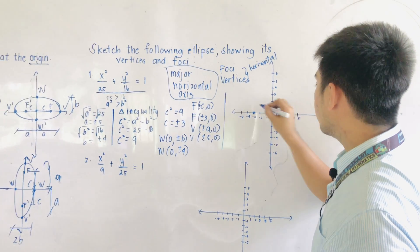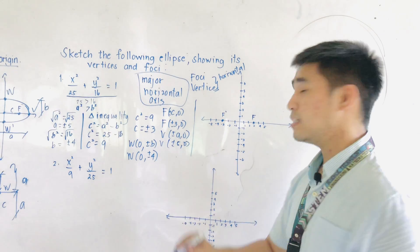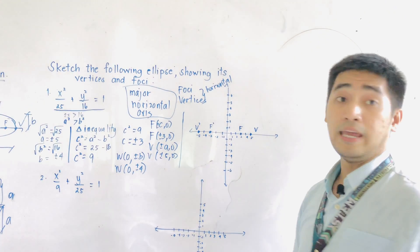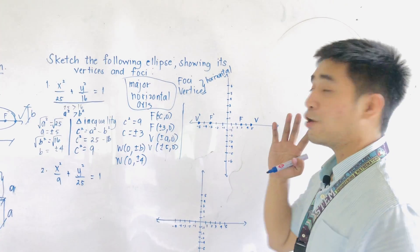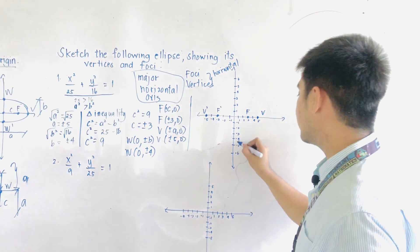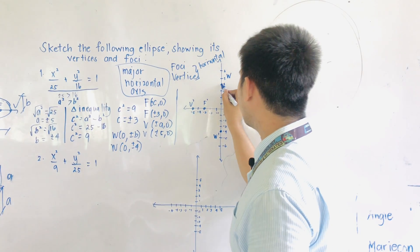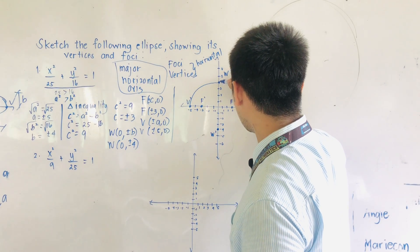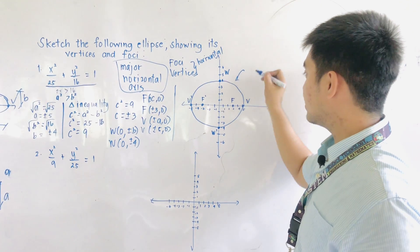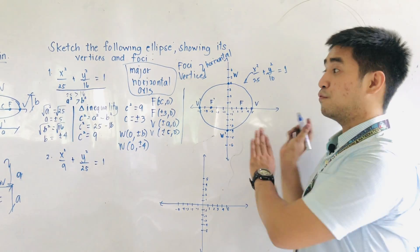For the co-vertices at (0, ±4): negative 4 is W prime and positive 4 is W. We're now ready to draw the ellipse. This is our ellipse with equation x² over 25 plus y² over 16 equals 1. That is the answer for the first problem.